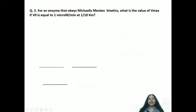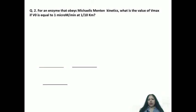Now let us move towards the second question of Michaelis-Menten kinetics, in which you need to find the value of Vmax if V0 is equal to 1 micromolar per minute at one-tenth Km. In enzyme kinetics, you will always encounter new questions and it can be difficult to identify which values are given and which you have to find out. In this question, the value of V0 or initial velocity is clearly given as 1.